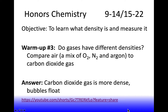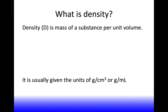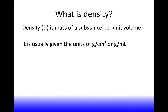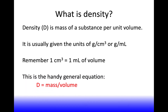Yes, gases have density, and they have different densities — just like every substance in the universe has a unique density. Density is the mass of a substance per unit volume. It's usually given in units of grams per cubic centimeter or grams per milliliter. A milliliter is the same volume as a cubic centimeter. The equation is: density equals mass per unit volume.